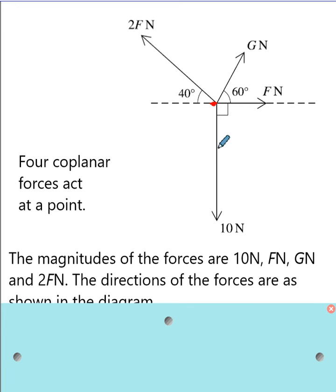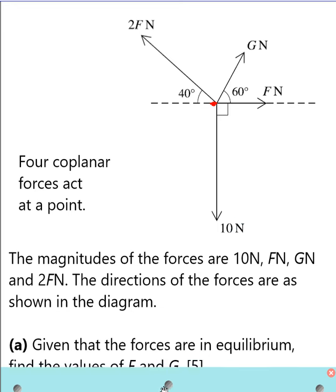You can see from the diagram the direction of the forces and their magnitudes. Some magnitudes are unknown like 2F and GF, and only one force is known which is 10 Newton. The first part of the question is informing you that forces are in equilibrium and you have to find out the value of F and G force.